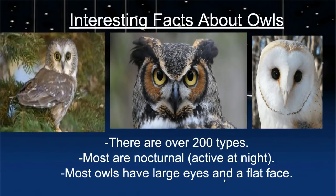There are some interesting facts about owls. There are over 200 types. Most are nocturnal, which means active at night. Most owls have large eyes and a flat face. Here we see three owls, and they each look different than each other. You can compare to see similarities, and you can contrast to notice the differences.